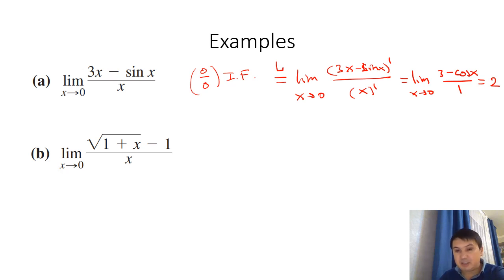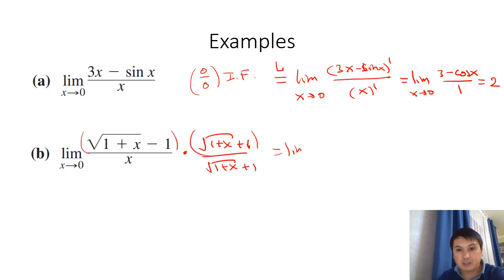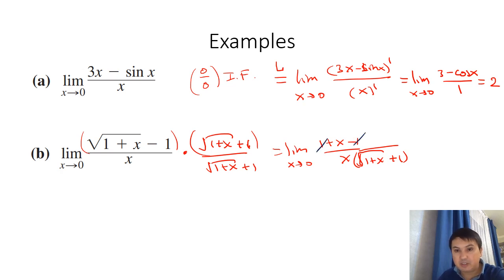You might remember this type of problem already. We can rationalize the numerator by multiplying by (√(1+x) + 1)/(√(1+x) + 1). The top becomes (1+x) − 1 = x, and the x cancels, leaving 1/(√(1+x) + 1). Letting x go to 0 gives 1/2. But let's also verify with L'Hôpital to confirm we get 1/2.